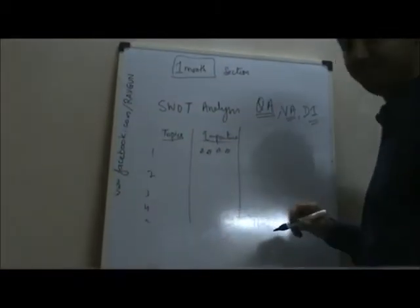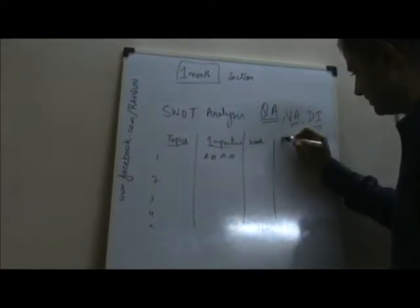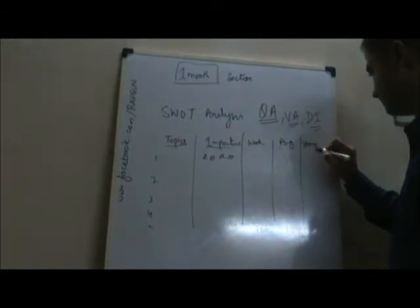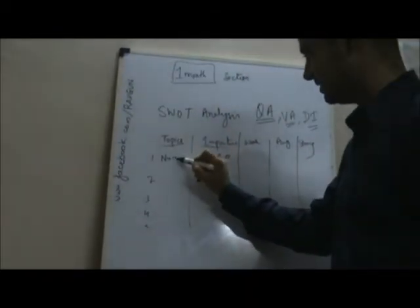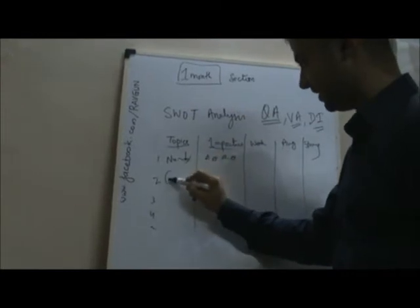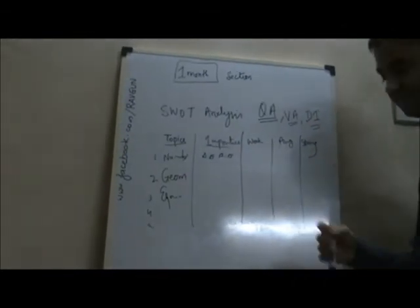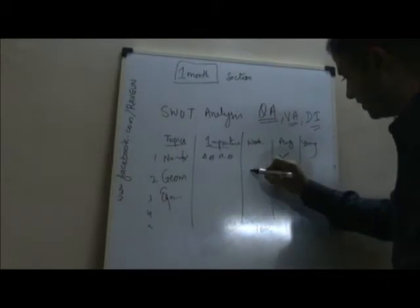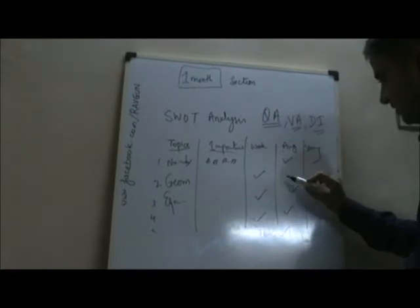Number one: topic. Number two: importance. Number three: is this weak for me, average for me, or strong for me? Go home, look at each and every topic - numbers, geometry, equations. These are the three most important things. In these three topics, go home and find out: are you average, are you weak, are you strong, whatever you are in those areas.